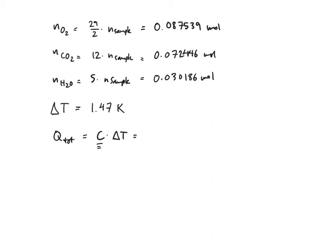I'm going to use the same C that I used for my benzoic acid video, which was 10,230 joules per Kelvin. Then I'm going to multiply this times 1.47 Kelvin.